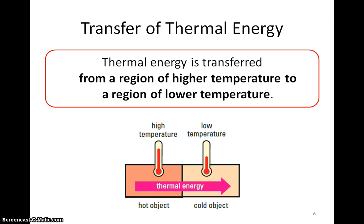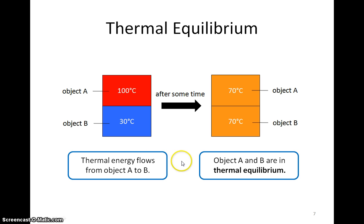Here comes the key concept for this video. Thermal energy is transferred from a region of higher temperature to a region of lower temperature — from a hotter object to a cooler object. For example, object A is hotter than object B because object A is at 100 degrees Celsius while object B is at 30 degrees Celsius.